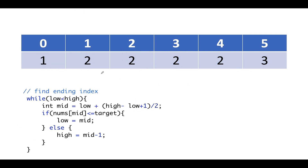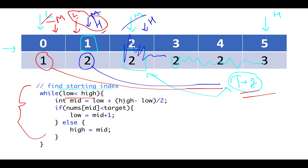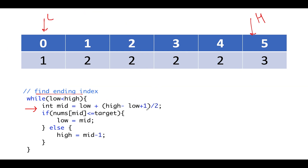Now let's proceed towards the second part where we're interested in identifying the ending index. We will follow the same steps, however there is a slight twist. There is a slight change in how we identify the middle element. Usually middle is identified using low plus (high minus low) divided by 2. However, here we additionally add one divided by 2, making the formula (low + high + 1) / 2, because we want to make it biased towards the right. We'll see why as we progress ahead.